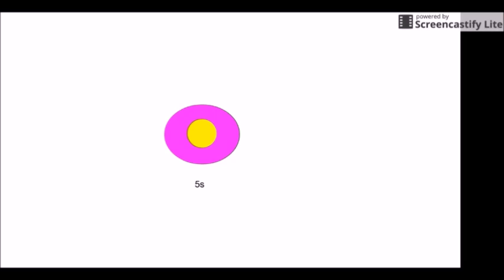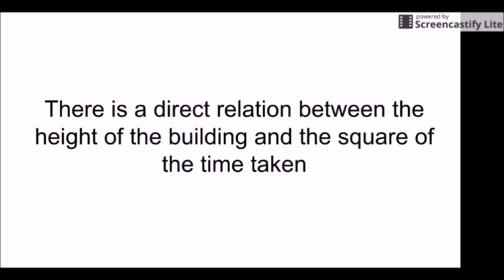This glaring contradiction made Galileo think about what's happening. With further experiments, he showed that the height of the building is directly proportional to the square of the time taken.